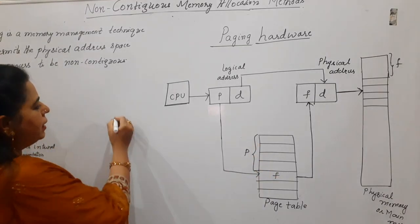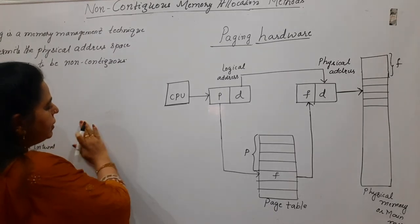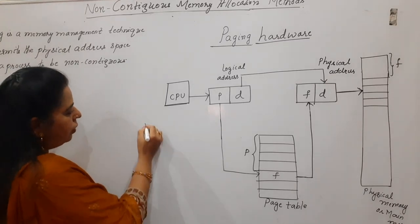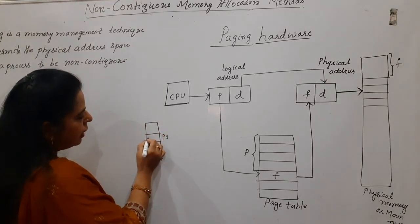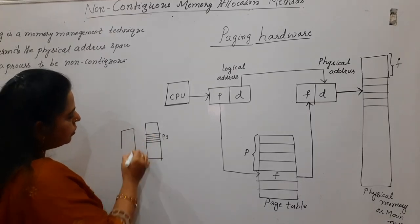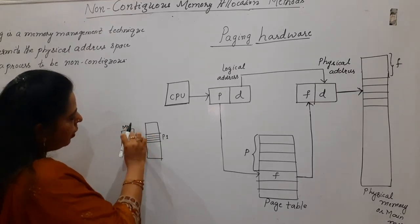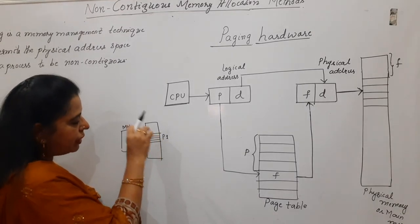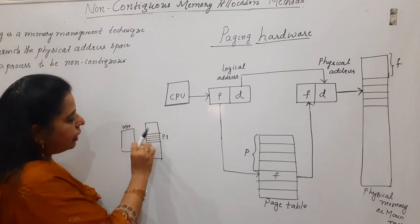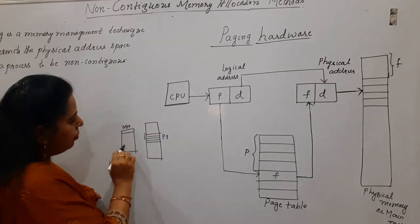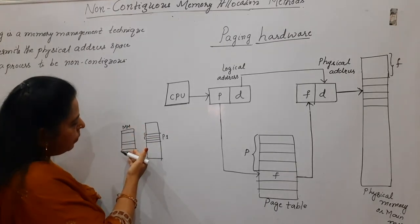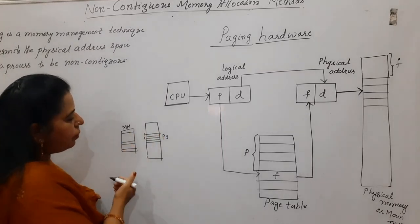First of all, as the name says, it is non-contiguous — you are not going to place the complete process in a continuous manner in the main memory. For example, if in the secondary memory this is the space allocated for process P1, when it comes to the main memory, process P1 does not come in a contiguous manner. The process P1 itself is divided into parts, and some part may occupy one place in the main memory, the second part may come somewhere else, the third part somewhere else. Wherever you find the space, you place the instructions for process P1.